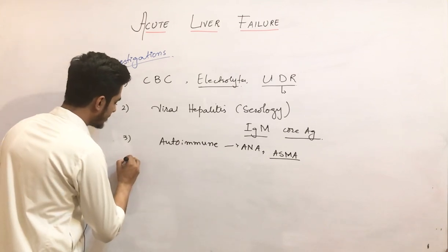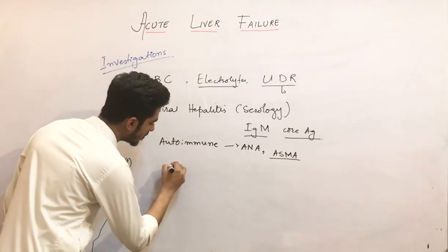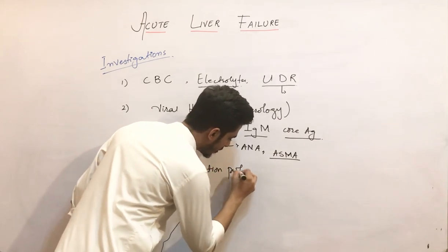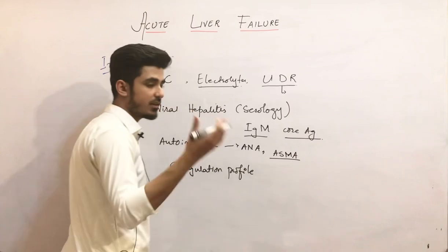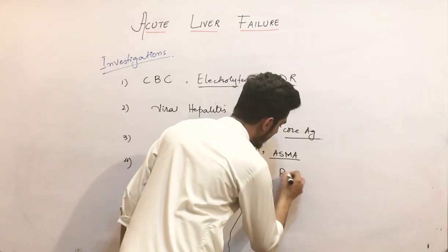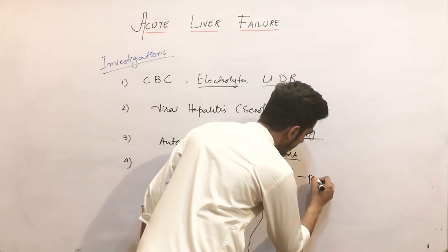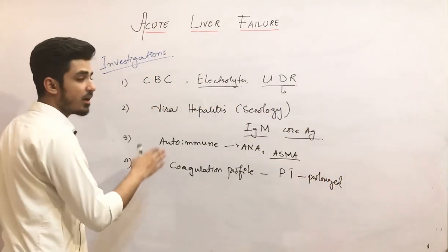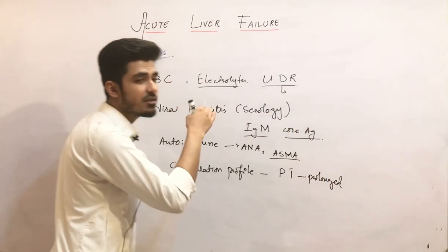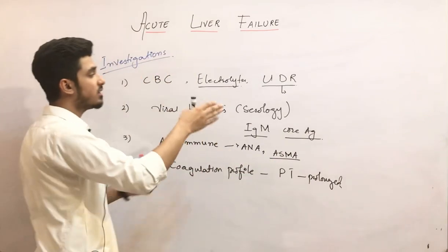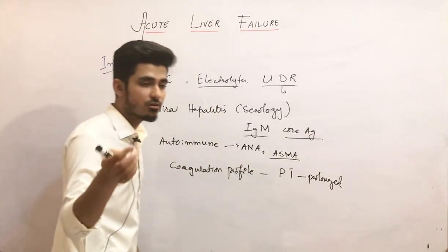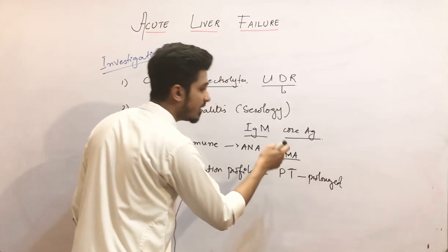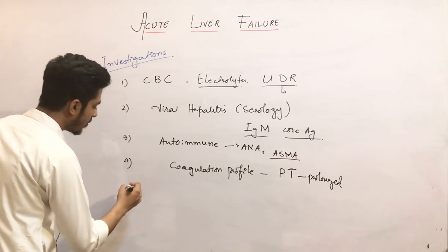Obviously we will also do the coagulation profile. In the coagulation profile, because the coagulation factors are deficient, the prothrombin time will be prolonged in these cases. I am explaining each investigation and why we are doing it in acute liver failure. In the coagulation profile we will see that the prothrombin time is prolonged.